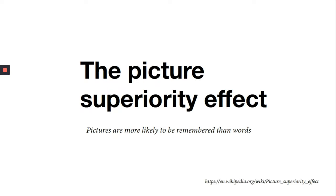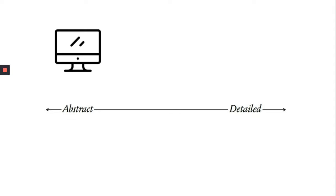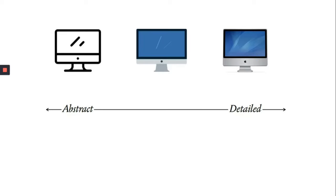This is called the picture superiority effect. Now, there are pictures that are more abstract in nature which remind us of real life objects rather than representing them, and then there are pictures which are very detailed and look exactly like the real life object, with a combination of both in between. We use abstract pictures to explain and to remind people about things. With them, bigger does not always mean better, as even if you make the picture bigger, you don't see any additional details. We mostly use those pictures to illustrate bullet points because they work in small sizes.